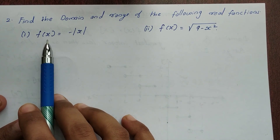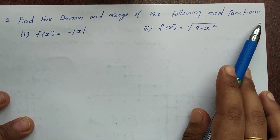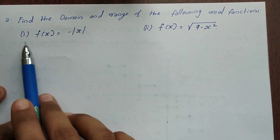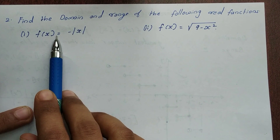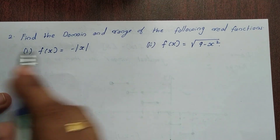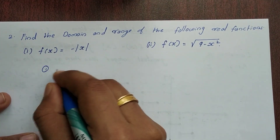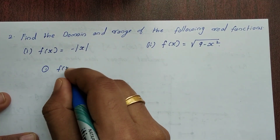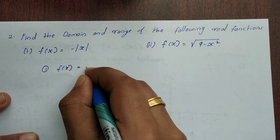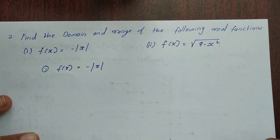Second question: find the domain and range of the following function. First question: f(x) is equal to minus mod x, that is f(x) = -|x|.